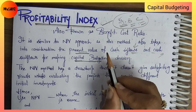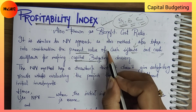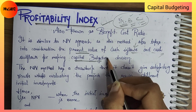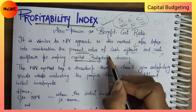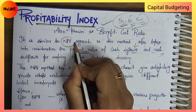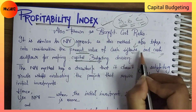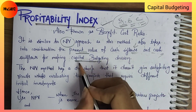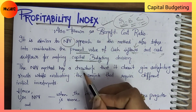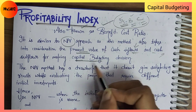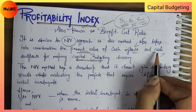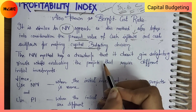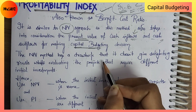The profitability index method is similar to the net present value method which we discussed last. The similarity is that in the net present value method we considered cash inflow and cash outflow, and in the profitability index method we will also consider cash inflow and cash outflow. However, there will be some differences.